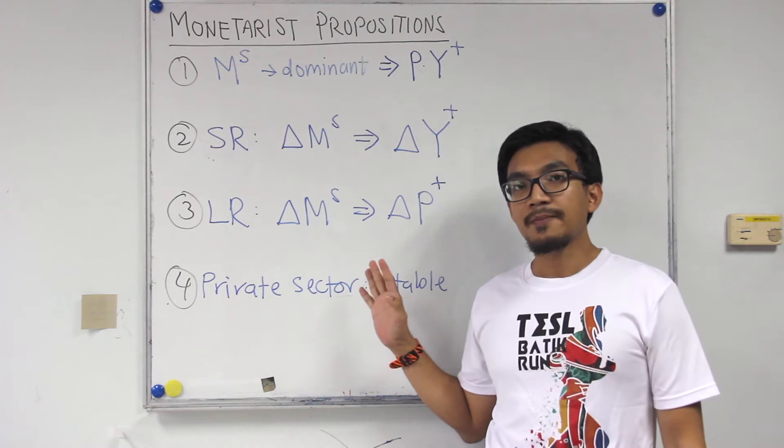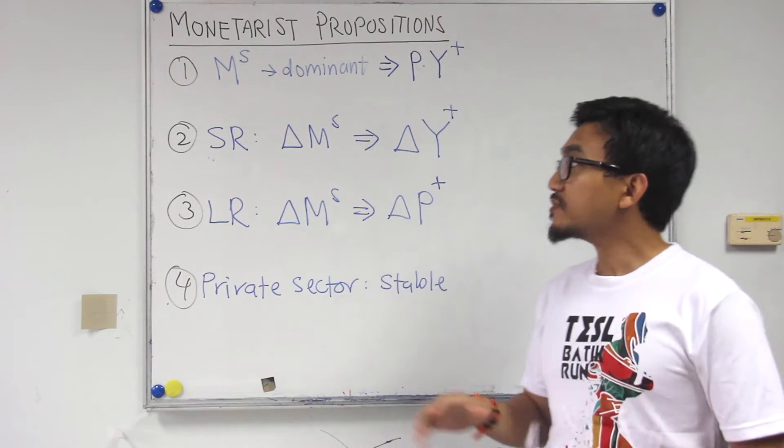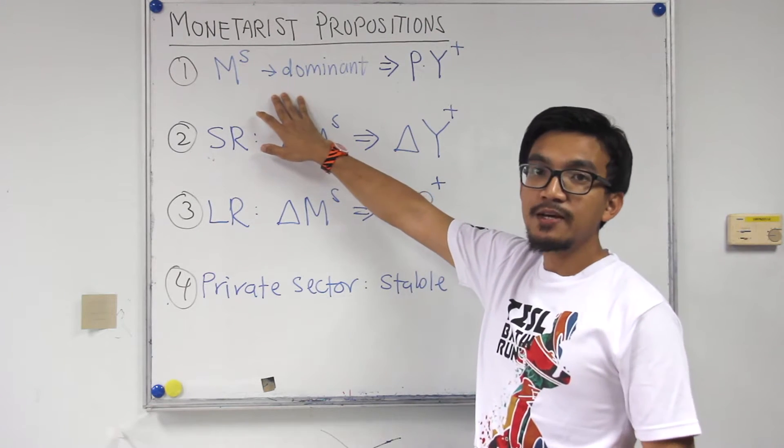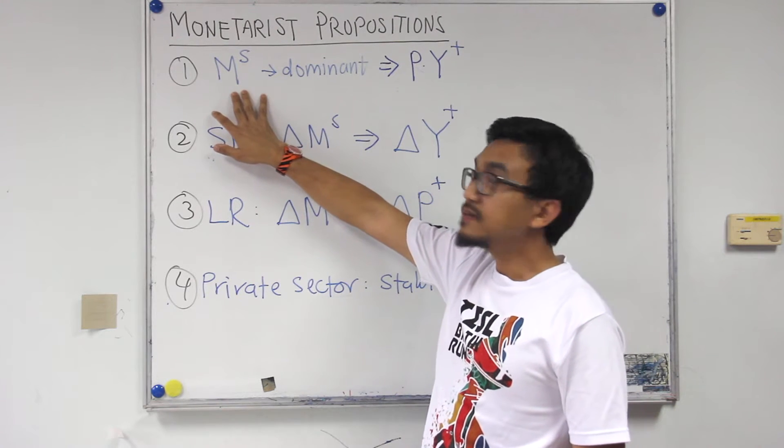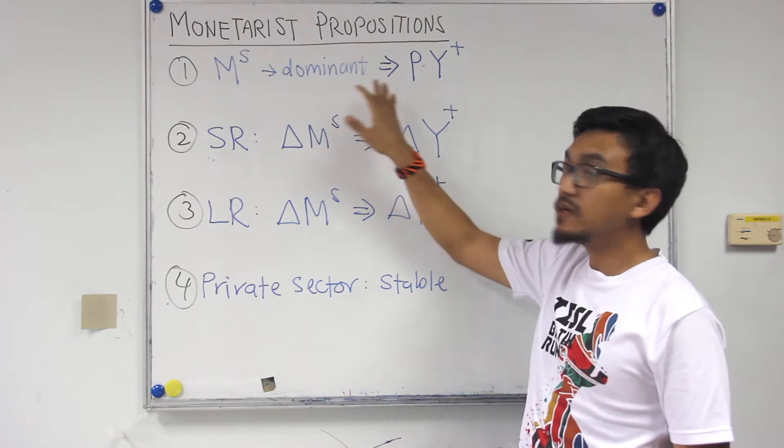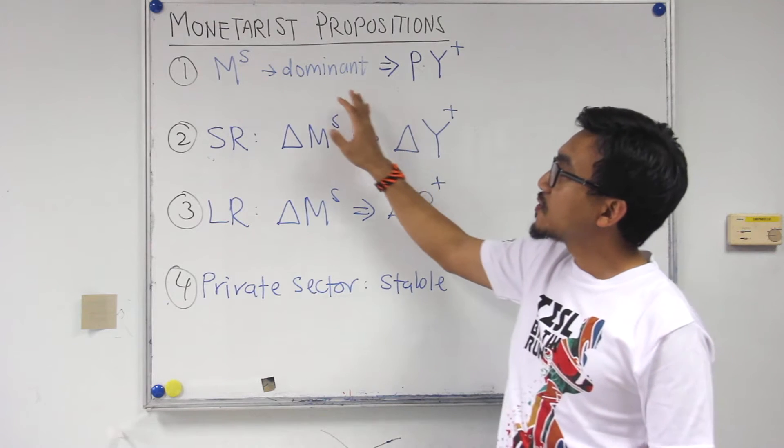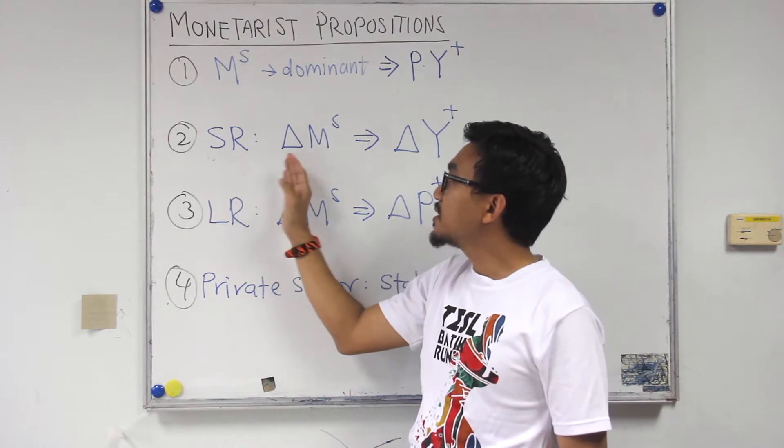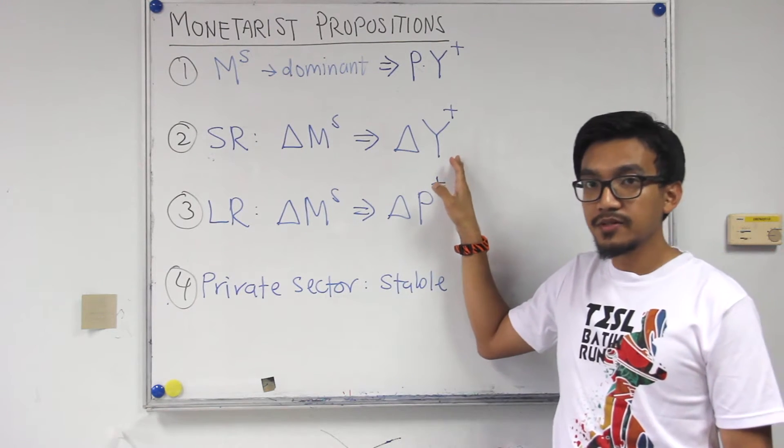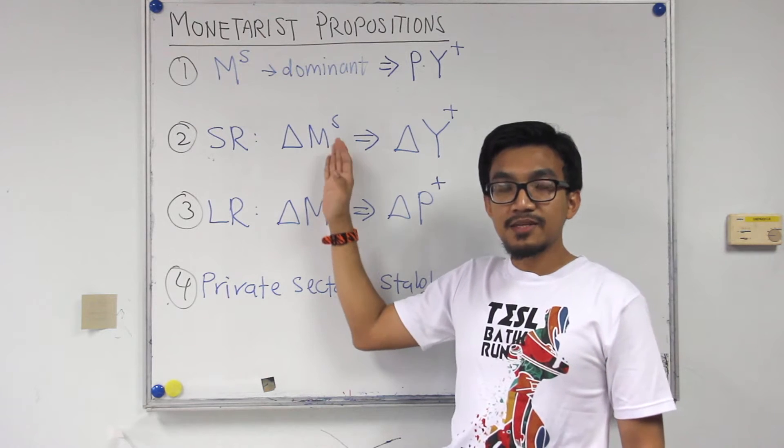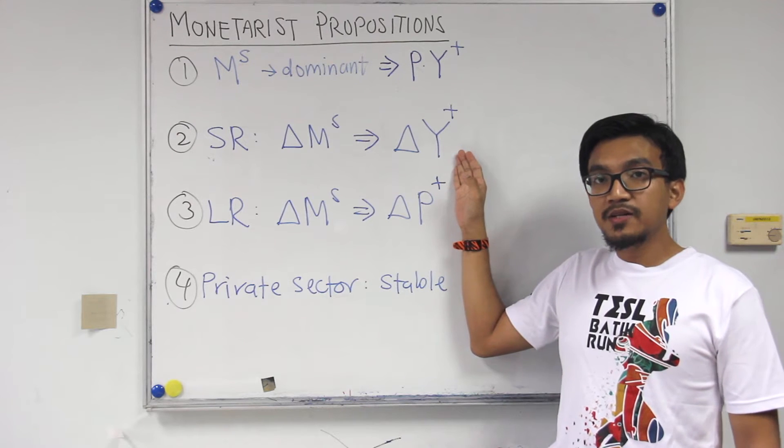So firstly I would like to highlight the four propositions put forward by the monetarist. So firstly, like what we discussed last week, the monetarists believe that money supply has a dominant effect on the nominal income so they will move in the same direction. Number two, they believe that in the short run a change in money supply will have a direct impact on real variables. So basically whenever the central bank increases money supply, real output and the other real variables in the aggregate demand will go up.